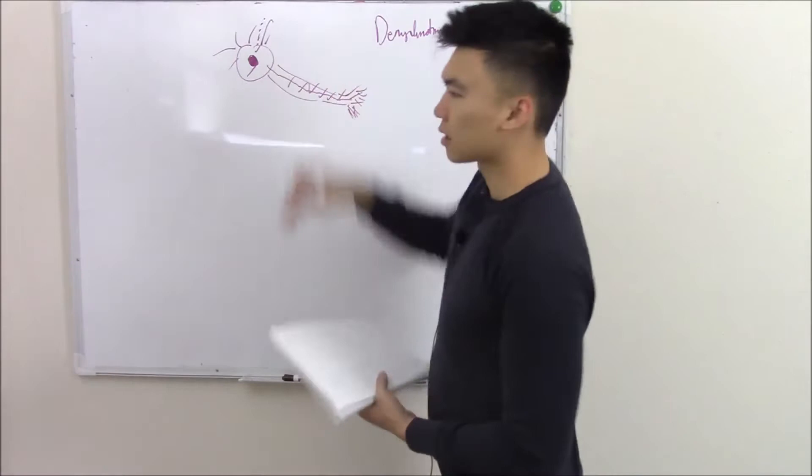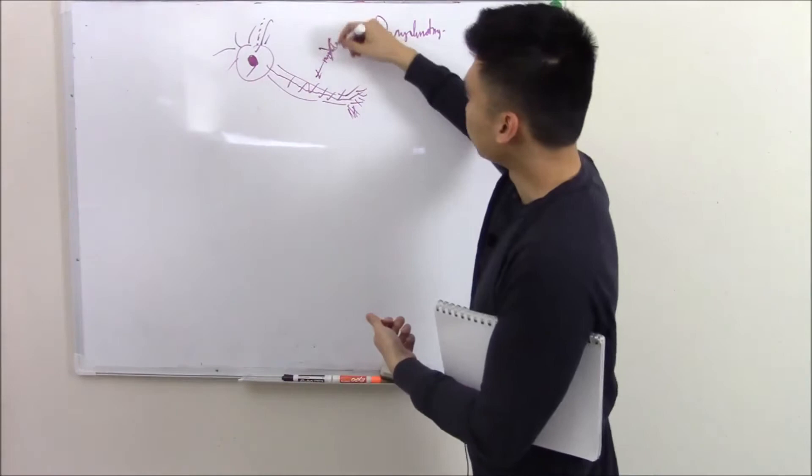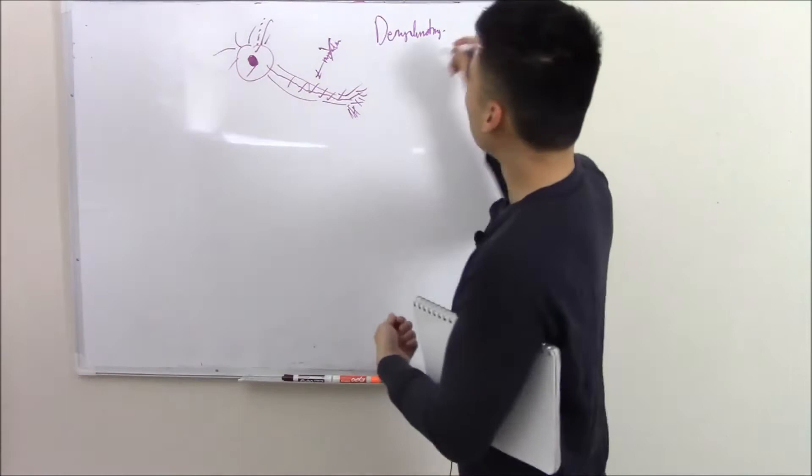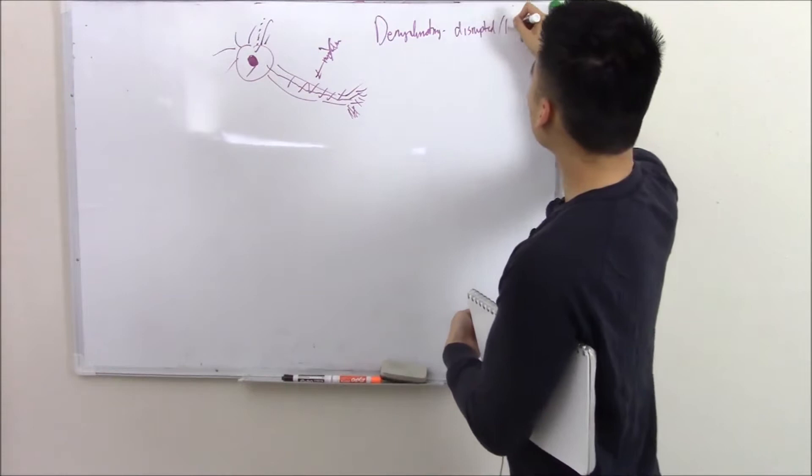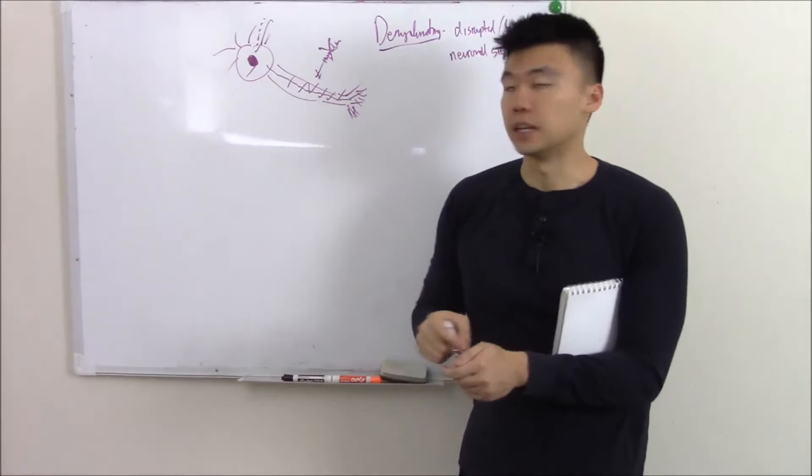Your axon is surrounded by this sheath called myelin. This myelin lets that transmission go quicker and go further. So if you break down this myelin, then you have disrupted neural signaling or sometimes no neural signaling altogether. This will be the topic of this video: demyelinating diseases.